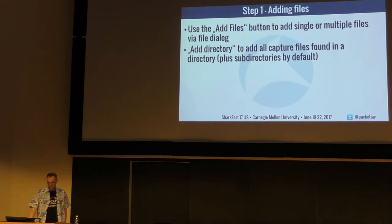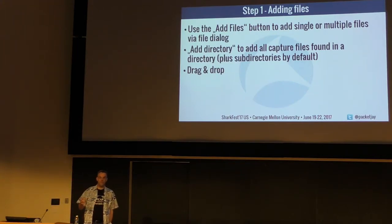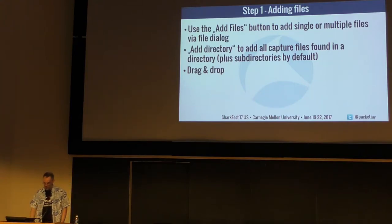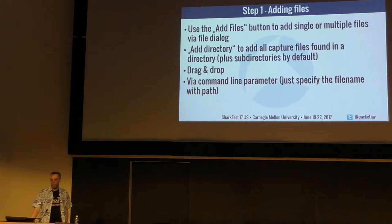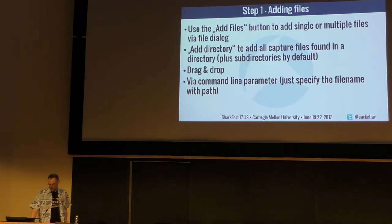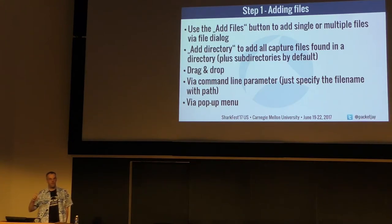You can add files with the Add File button, Add Directory, drag and drop, or command line parameters. If you drag a capture file it appears in the file list; if it's a task definition file it goes into the task list automatically. Paul Offord uses Trace Wrangler via command line parameters — you can tell it to add a file, apply a task, auto-run, and quit. Right-clicking on the file list opens context-sensitive pop-up menus with a lot of options.